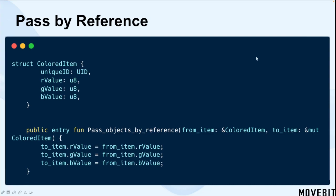And for the pass by reference, let's see the code example. This code defines a structure named ColorItem that represents an object with color properties. The properties include a unique ID of the type UID and straight color components: R value for red, G value for green, and B value for blue.